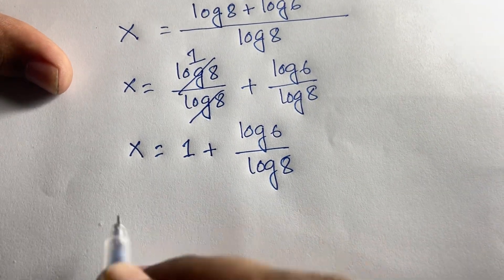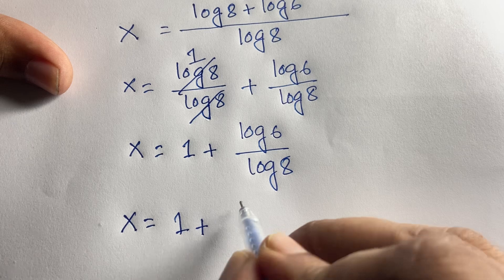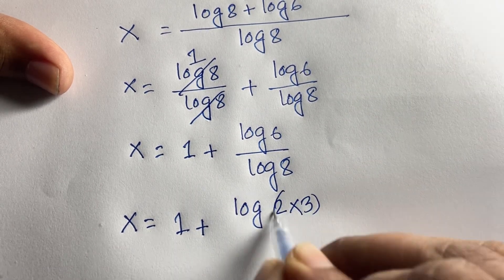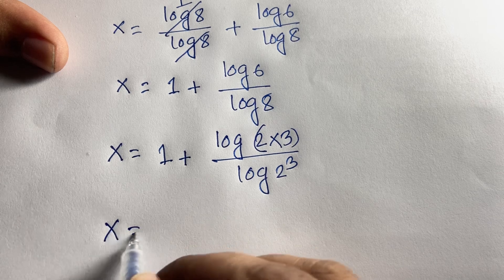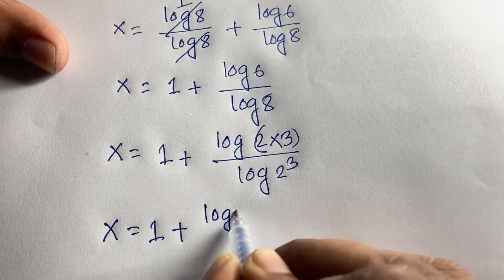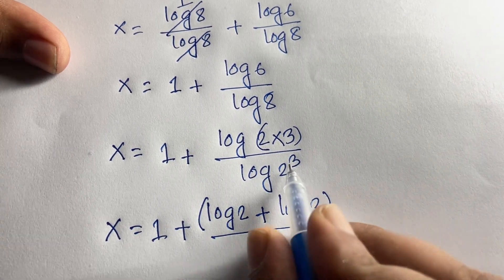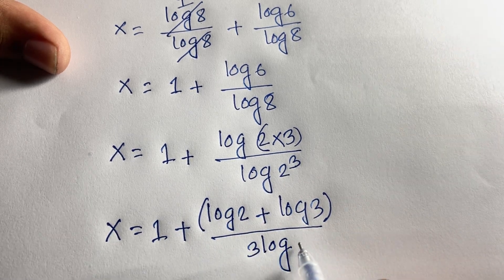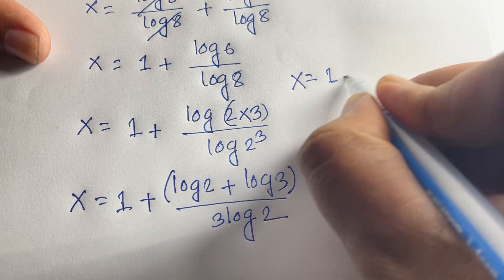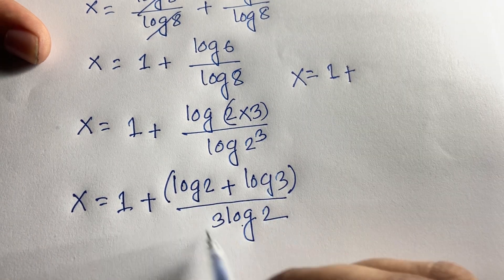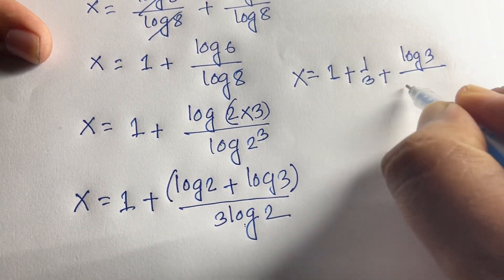So x is equal to 1 plus log 6 over log 8. Now, log 6 equals log(2 times 3), and log 8 equals log 2 to the power 3. Applying logarithm rules, this becomes log 2 plus log 3 in the numerator, and 3 log 2 in the denominator. Splitting the fraction gives 1 over 3 plus log 3 over 3 log 2.